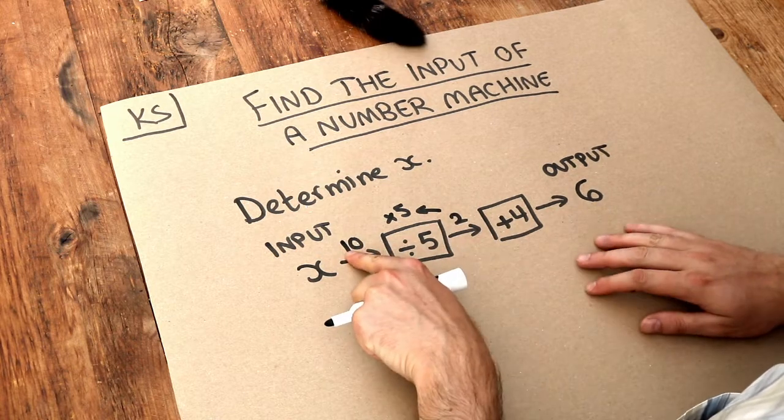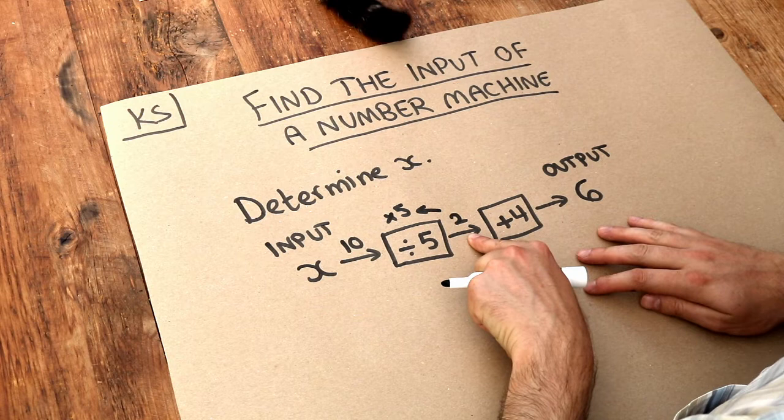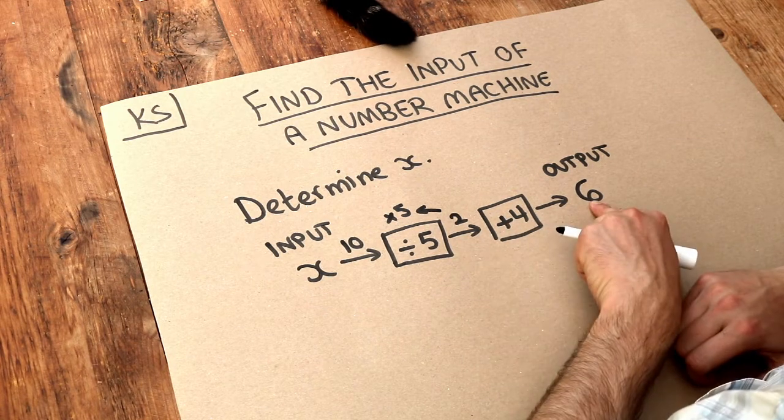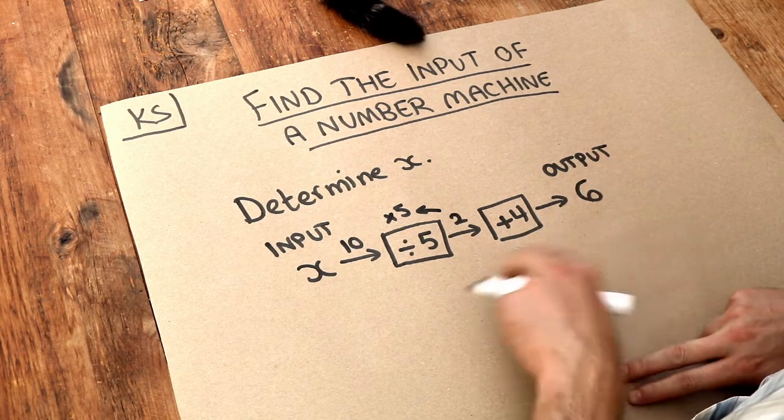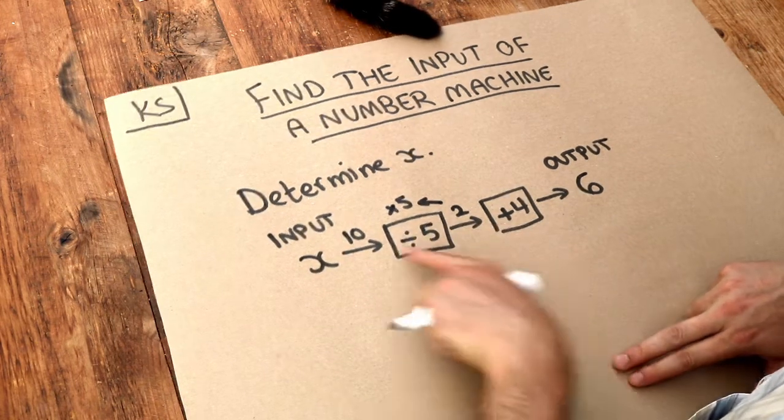And let's just check that. 10 divided by 5 would give you 2, and then 2 plus 4 is equal to 6, which is right. So therefore, x, this input to the first operation here, is 10.